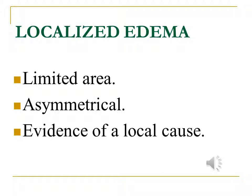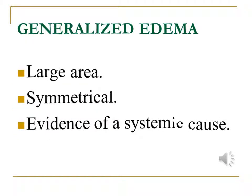Localized edema affects a limited area of the body, usually asymmetrical, involving one arm or one leg, and you might see evidence of the local cause. Generalized edema caused by general retention of fluid usually affects a larger area of the body, although in the early stages when it is mild it might affect a small area, usually in the dependent parts — in the feet in a mobile patient, or in the back or sacral area in a patient who is bed-bound.